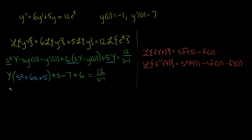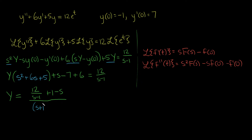Now what we have is big Y equals — doing lots of algebra — 6 minus 7 is negative 1, so we add positive 1 to both sides, and then subtract the s, and divide by this denominator. Let's see if there's an easy way to factor s squared plus 6s plus 5 — it looks like there is: s plus 1 times s plus 5, because 1 plus 5 is 6 and 1 times 5 is 5.